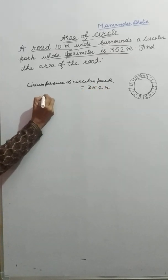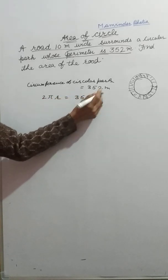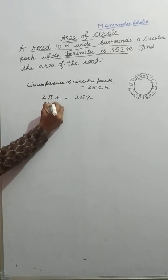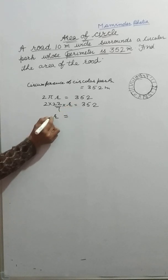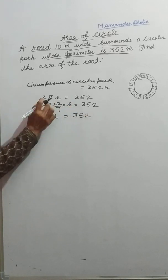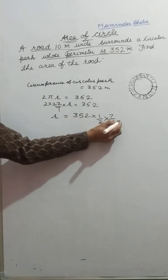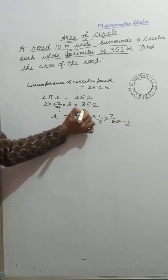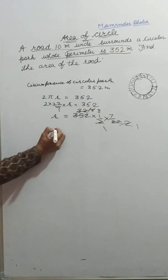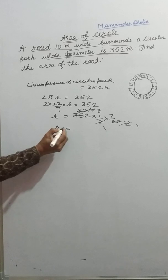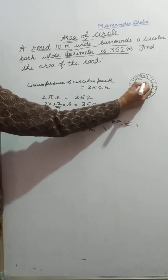Our formula for circumference is 2πr. From this formula we can get the radius. 352 meter is the circumference, and the value of π is 22/7. So radius equals 352 × (1/2) × (7/22), which gives us the radius of this circular park as 56 meter.